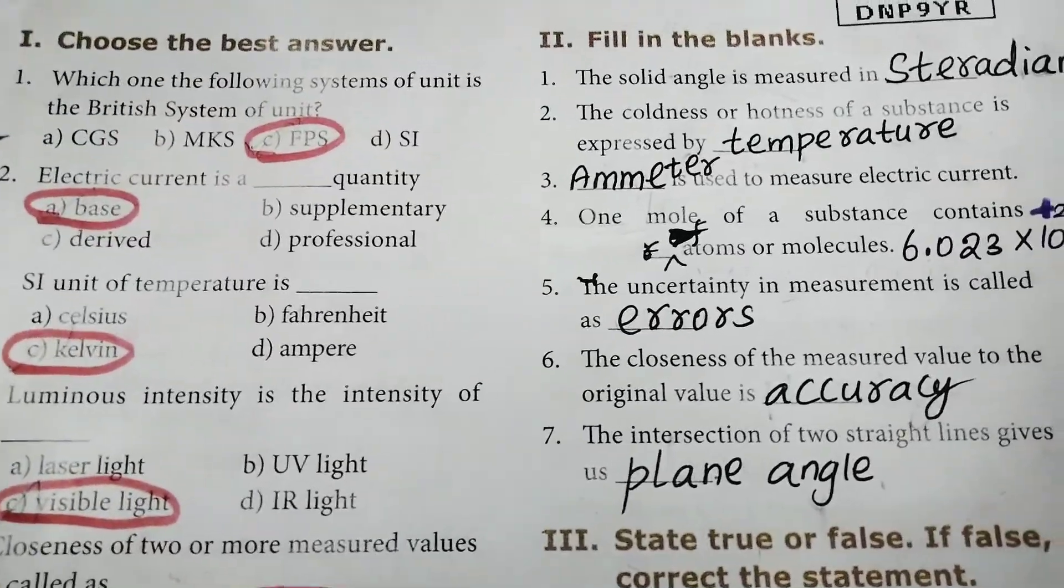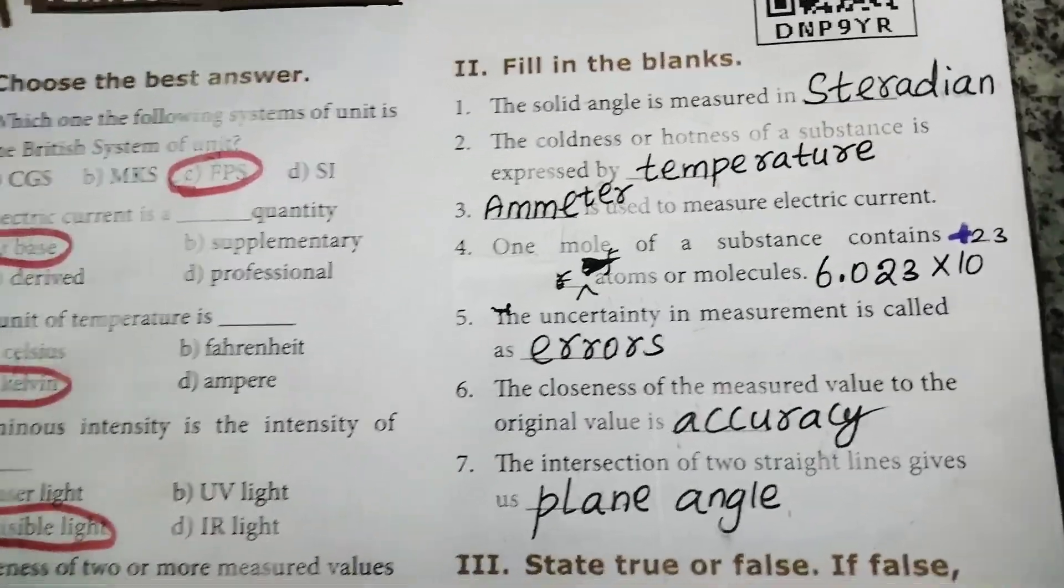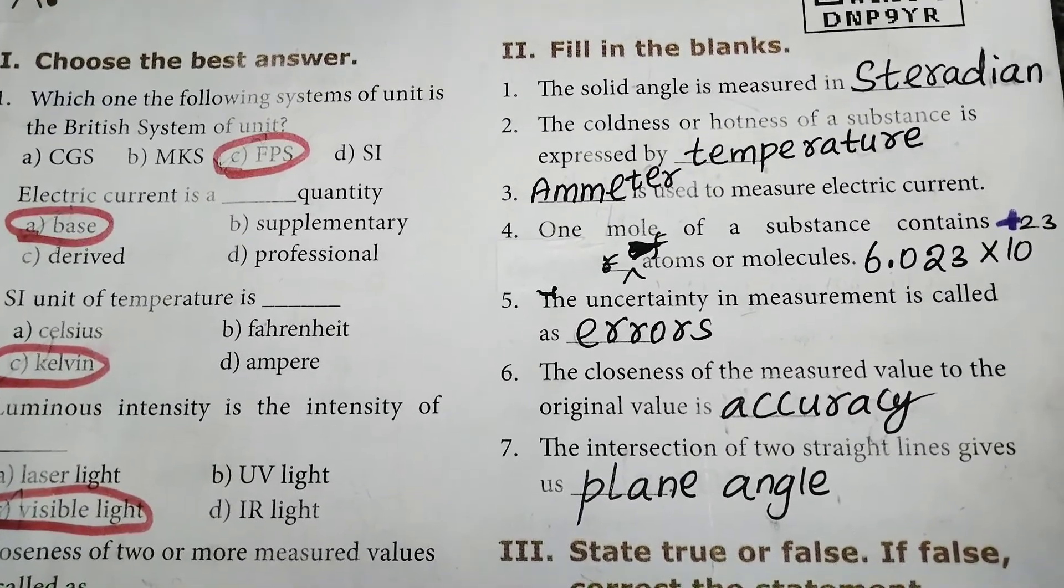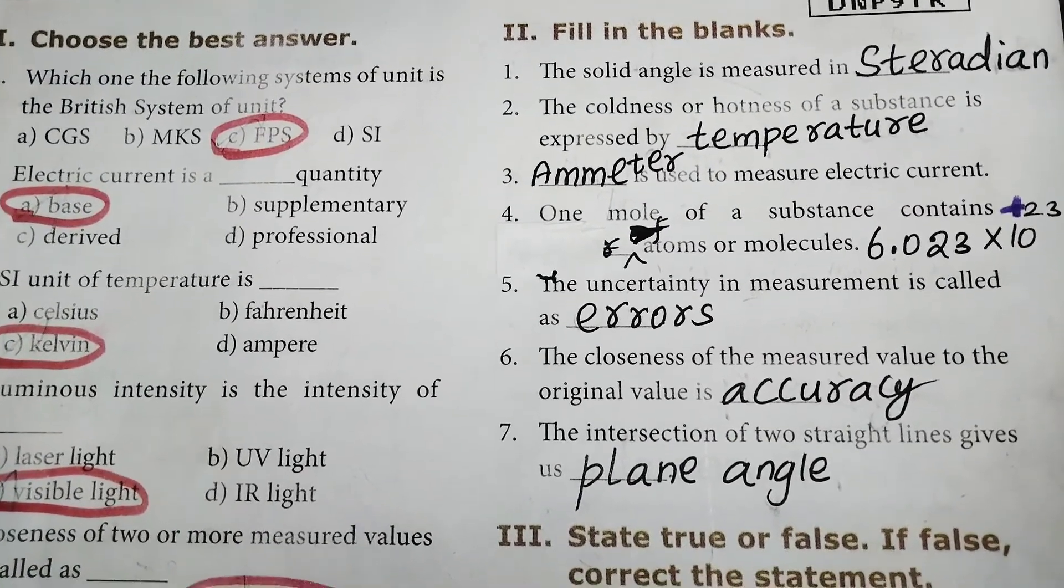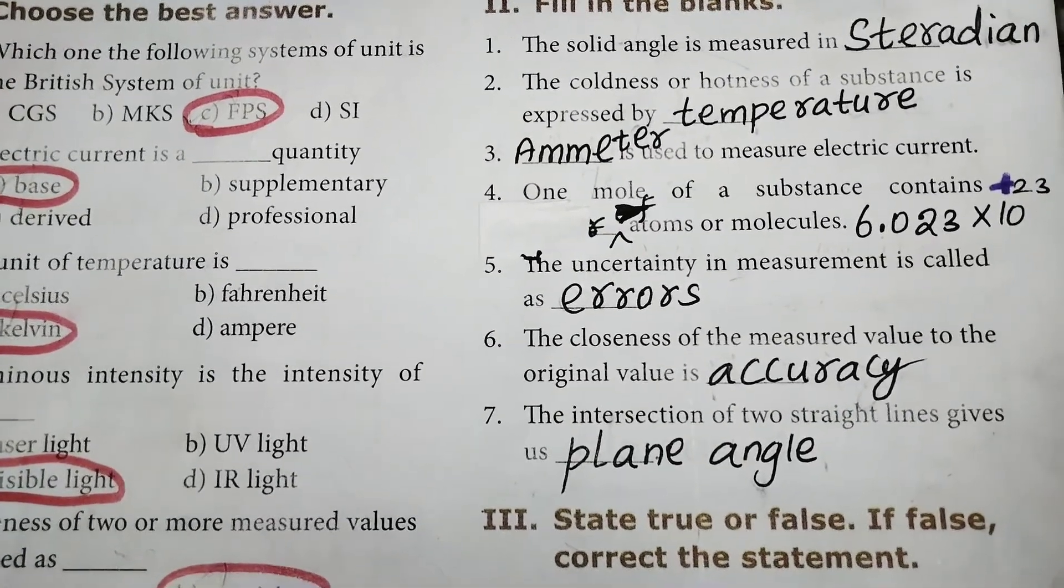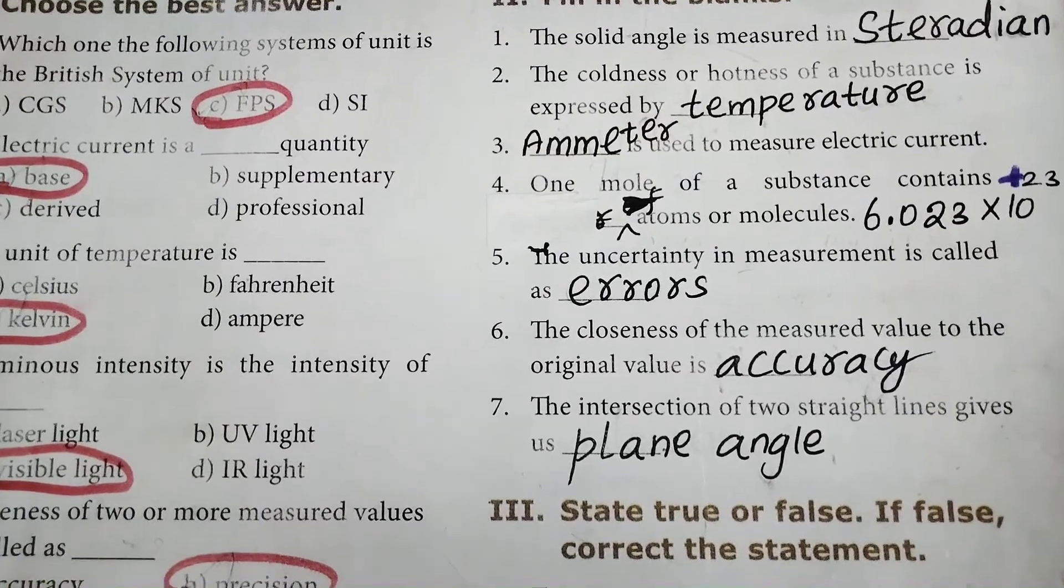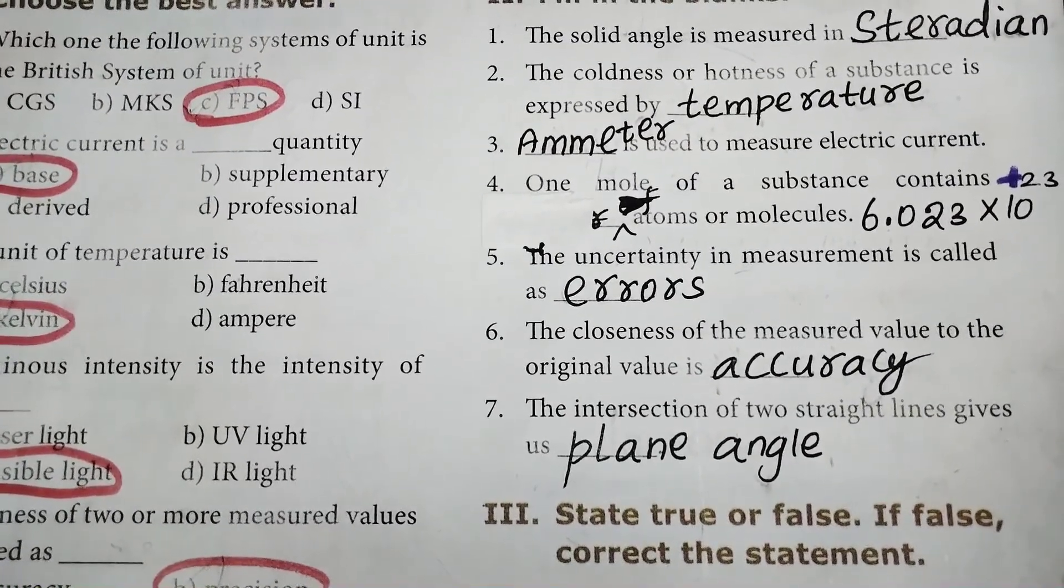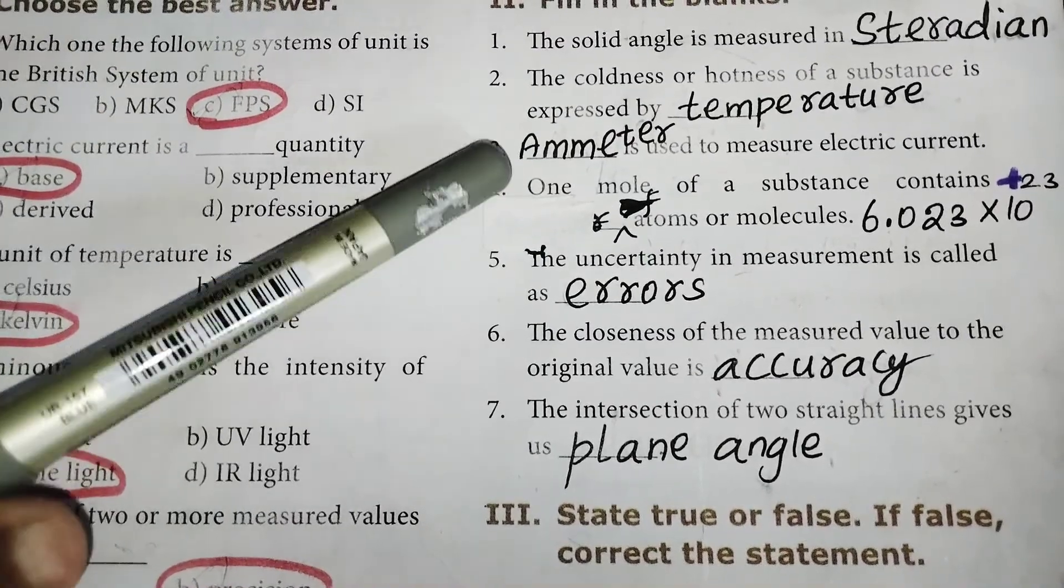Now, Roman letter 2, fill in the blanks. First one, the solid angle is measured in steradian. Second one, the coldness or hotness of a substance is expressed by temperature. Third one, ammeter is used to measure electric current.